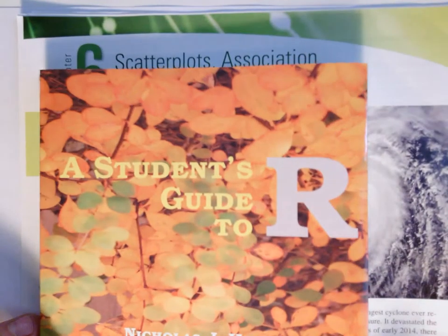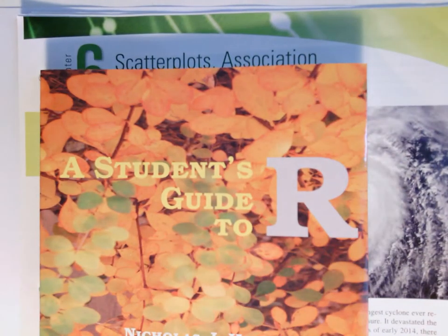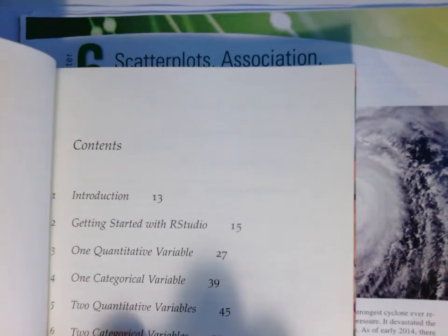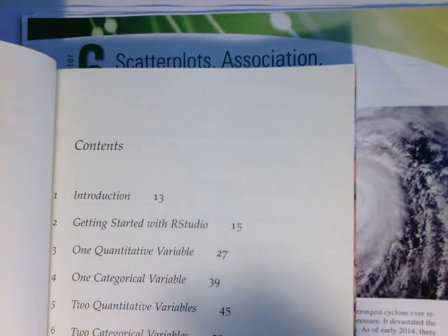Just a reminder, we do have the supplementary resource, The Student's Guide to R, available in fine bookstores and also freely available as a PDF. The relevant chapter here you want to be looking at is two quantitative variables, Chapter 5.